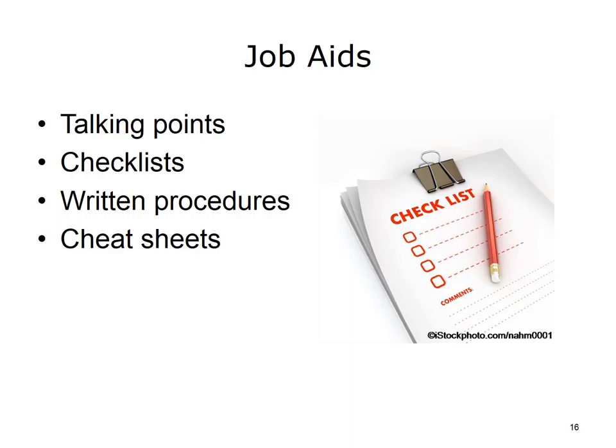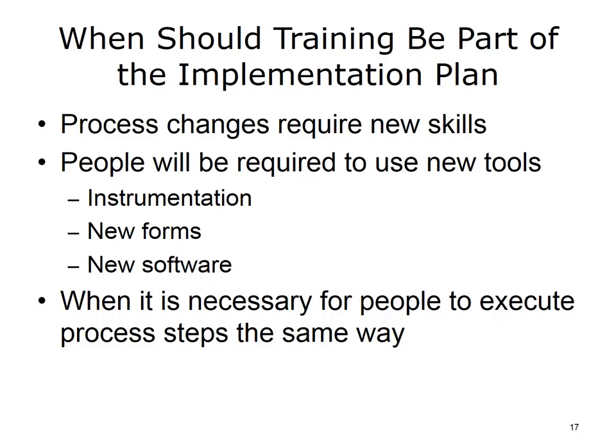The creation and training on job aids should be included in the implementation plan. When process changes require new skills — like using new software, or a different way of doing something, like completing a lab sample requisition form on the computer versus a paper one — training should occur. Training should also occur when multiple ways of doing something are possible but the job requires that everyone does it the same way. The formality of the training depends on the extensiveness of the change and the number of people that need to be trained, and can include classroom-style training, one-on-one training, or web-based modules for software training.